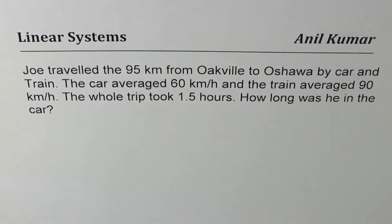The question here is Joe traveled the 95 kilometer from Oakville to Oshawa by car and train. The car averaged 60 kilometers per hour and train averaged 90 kilometers per hour. The whole trip took 1.5 hours. How long was he in the car? That's the question for you.